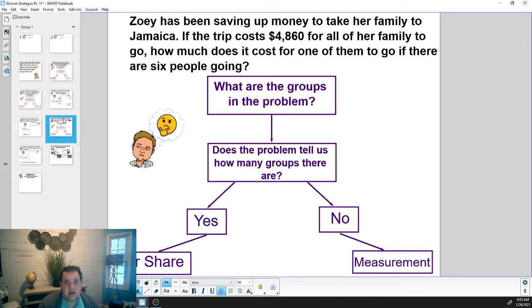If you said people, you are correct. Awesome job. I'm proud of you. It is people because we know we have the cost and there's people going. We want to know how much it costs for one person to go. So we're going to take those six people and divide the money evenly among them.